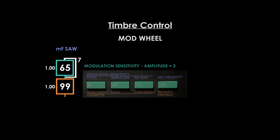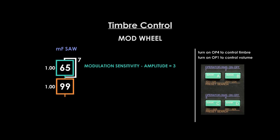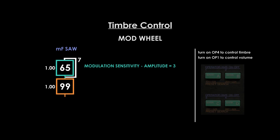Select MF Saw that you've just programmed, go to mod sensitivity amplitude and set it to a maximum value of 3. Engage your modulator by pressing the corresponding operator AMS on/off button. These are also bank buttons: Bank A for operator 1, Bank B for operator 2, Bank C for operator 3, and Bank D for operator 4.